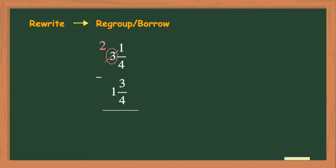So since my common denominator is a 4 my improper fraction will also have a denominator of 4. Then to make this fraction equivalent or equal to the one that I just borrowed the numerator must be a 4 as well.